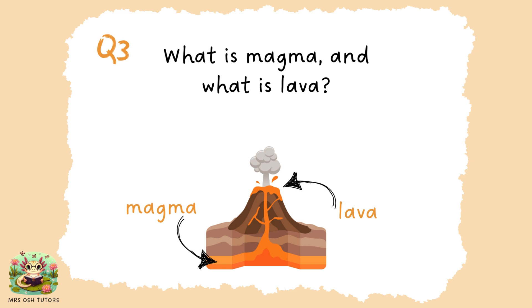Question three: in a volcano, the magma is the molten rock that is underneath the ground. Once it emerges outside the ground, out of the volcano, we call it lava.